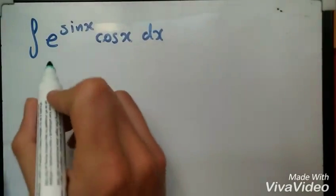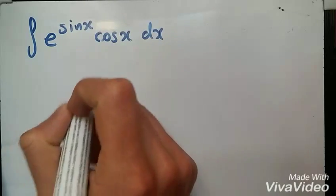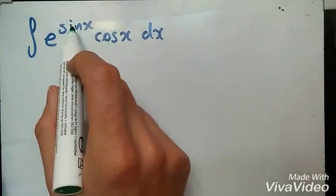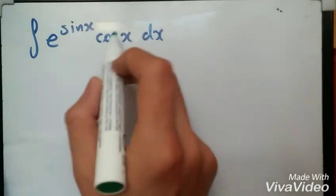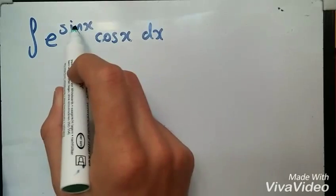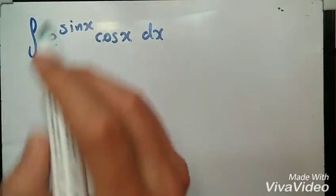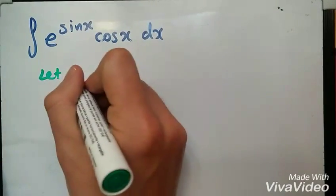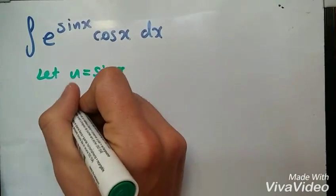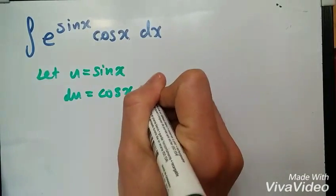So what I would do initially is consider which u to use with the method of substitution. Which one should I let be u? If I let sin x be u and take the derivative, I get cos x dx, which is fine because it's on the same line as dx. If I took the other one, it would get ugly. So let u = sin x, and taking the derivative, du = cos x dx.